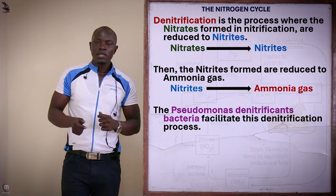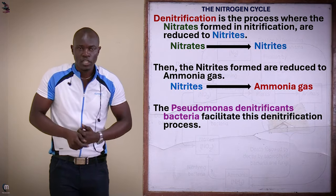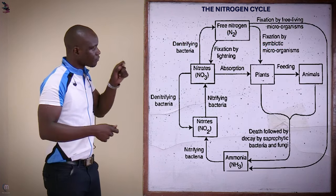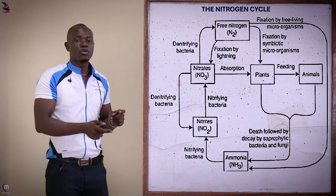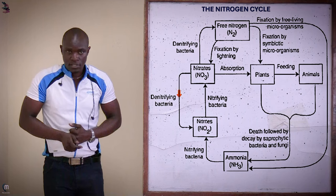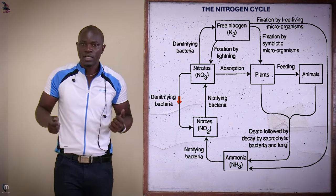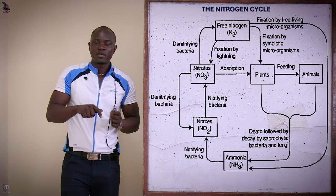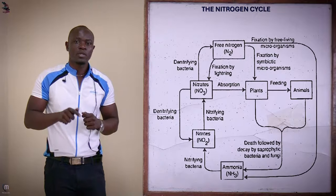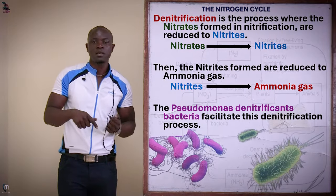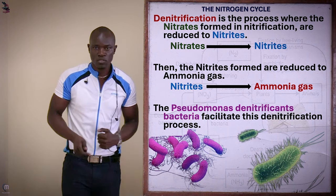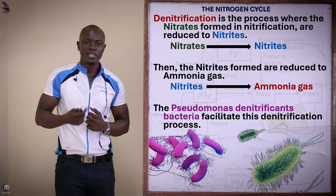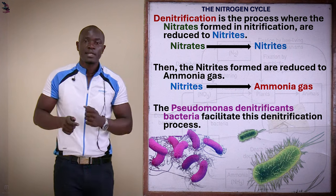The next step is denitrification. In this process, nitrates are reduced back to nitrites, and then further reduced to ammonia gas. This ammonia gas is then reduced back to nitrogen gas, which enters into the atmosphere. The pseudomonas denitrificans bacteria are responsible for facilitating the process of denitrification in the nitrogen cycle.